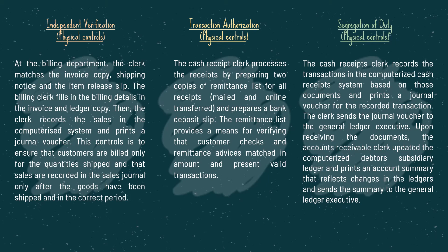One of the strengths of the internal control procedures is independent verification. The clerk matches the invoice copy, shipping notice, and item release slip to ensure customers are billed only for the quantity shipped. The second is transaction authorization — the preparation of two copies of the remittance list verifies that the customer's check and remittance advice match in amount and represent a valid transaction. The third is segregation of duties — the cash receipt clerk and accounts receivable clerk have different duties, and each must send the general voucher and summary to the general ledger executive to reconcile.